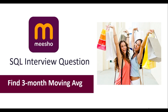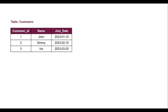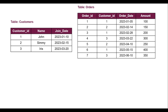Hey everyone, so in this video I've come up with another SQL interview question. It has been asked in Meesho. The problem is on finding the three-month moving average of revenue. This problem will also help you understand how to calculate sales trends over time. So let's move on to the problem statement. Assume that you have been given two tables: the customers table and the orders table.